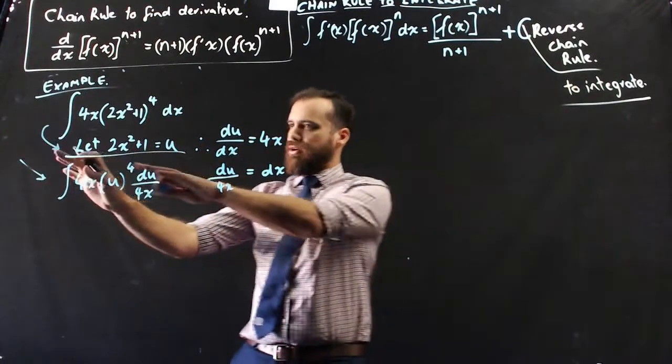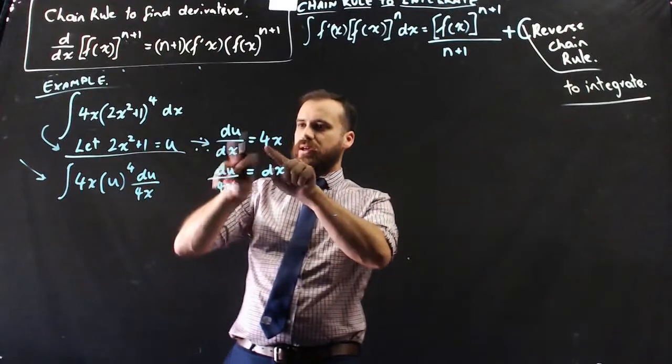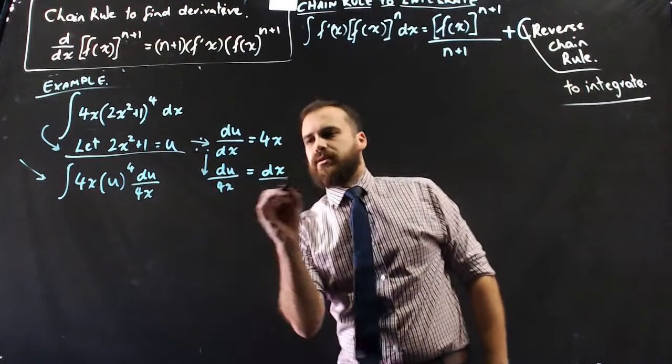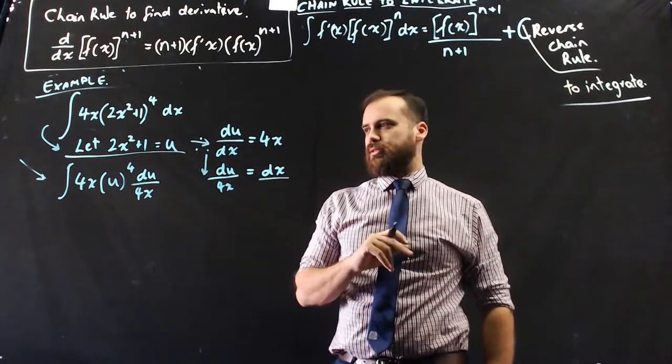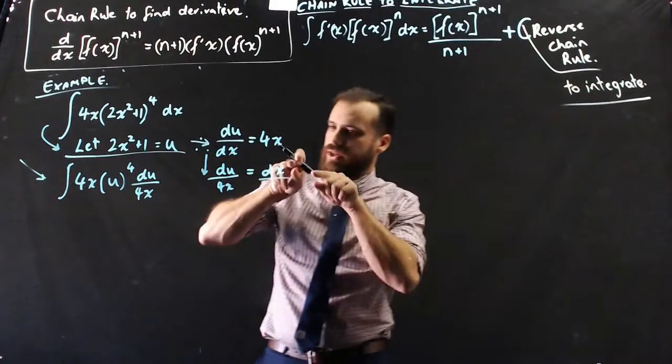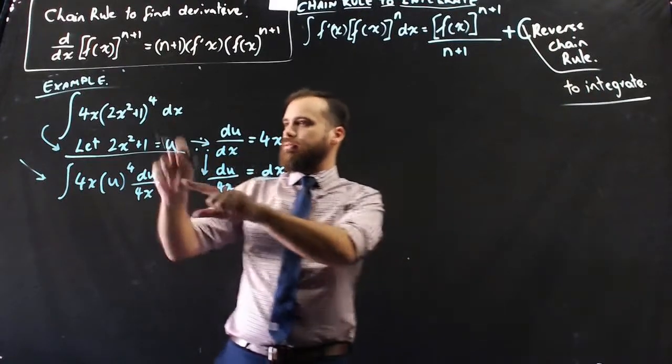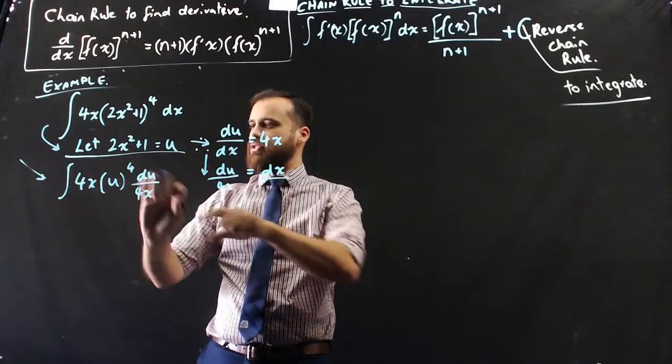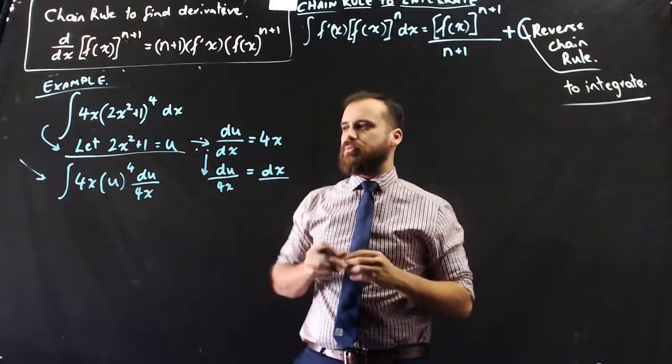And then, I'm going to find the derivative of that, and then rearrange it to make dx the subject. Now, if I do that, I can remove dx, and I can write everything in terms of u. Well, almost everything in terms of u.